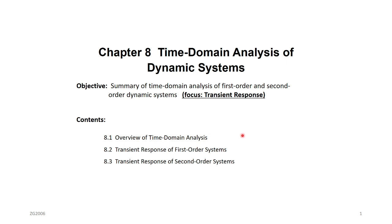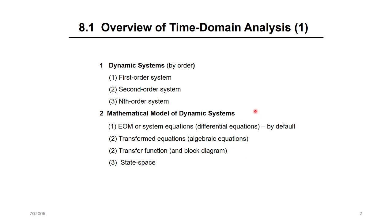Before we start analyzing dynamic systems, let's go through an overview, then we will move to first order and second order systems. So far, the dynamic systems we learned — the order of a dynamic system could be first order, second order, or nth order. Nth order means it's a combination of first and second order together — it will be a higher order system. But most of the systems you see around you are either first order or second order systems. That's why we're going to focus in this chapter on analyzing first order and second order systems.